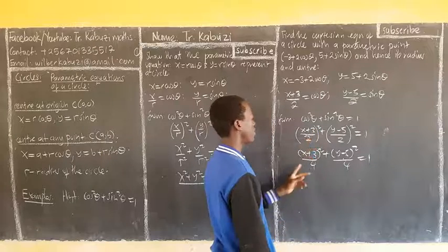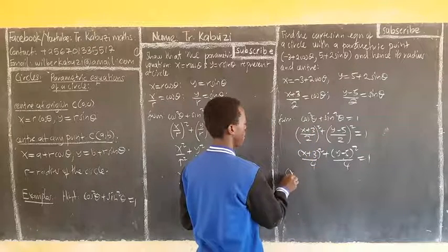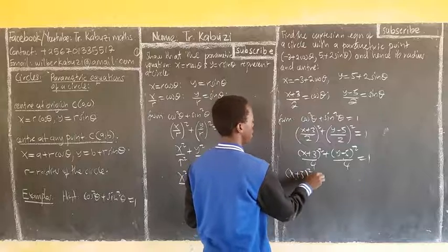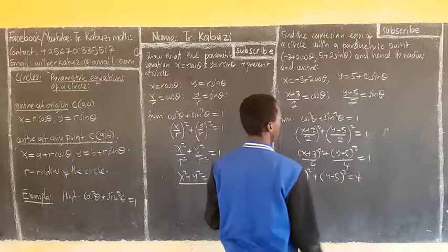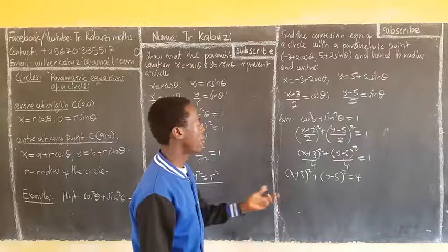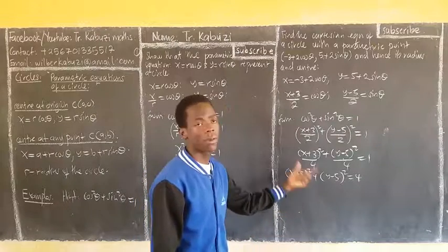And square this, square this. Multiply by 4. You get x plus 3 squared plus y minus 5 squared equal to 4. If they want the standard form, you can give it this form or we can expand.